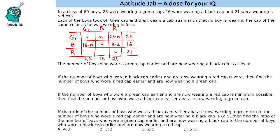Adding across the black row should give 16, so the black-to-green entry becomes 18 minus n and the black-to-red entry is 16 minus n. We verify: row sums give 23, 16, and 21, and column sums also give 23, 16, and 21. These are the old cap counts on one axis and the new cap counts on the other.